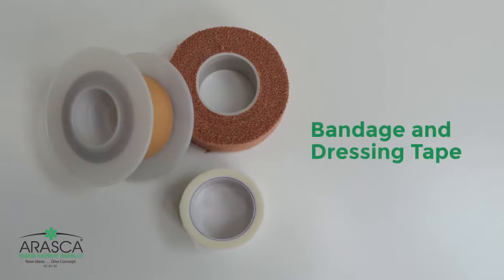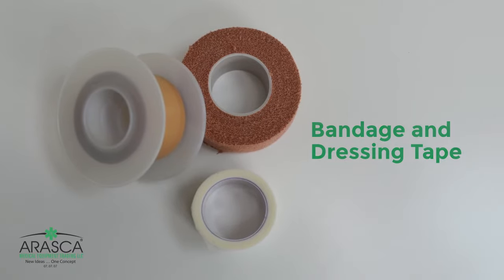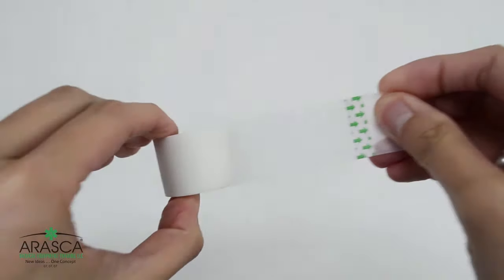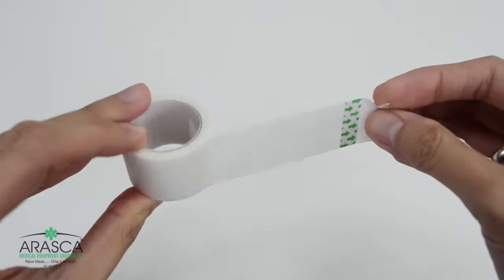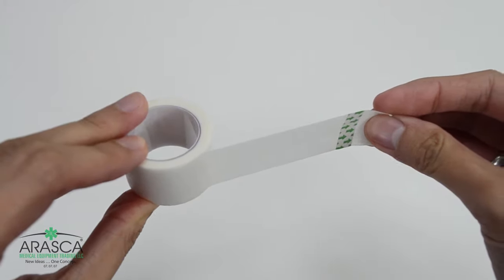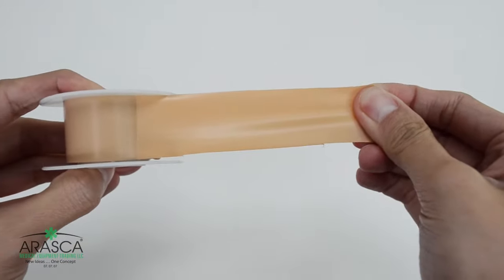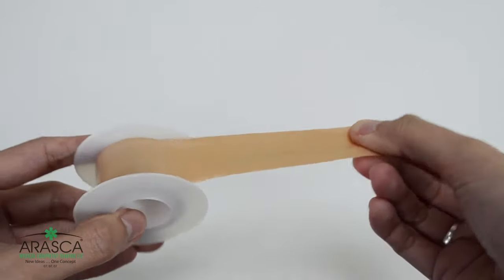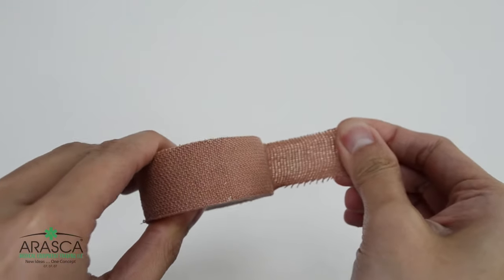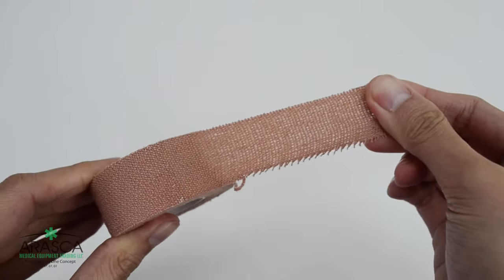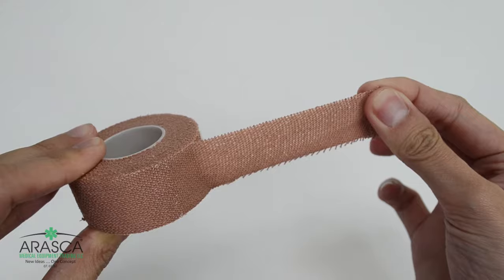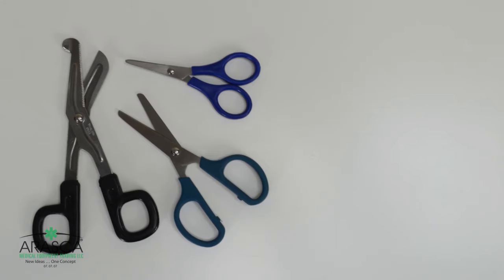Another important item to secure bandages and dressings are tapes. Paper tape is more breathable. Washproof tape is made with plastic or silicone material that resists moisture and sweat. Tape containing zinc oxide helps with healing, sticks firmly onto skin, and conforms to the shape of the body, which makes it ideal for athletes.